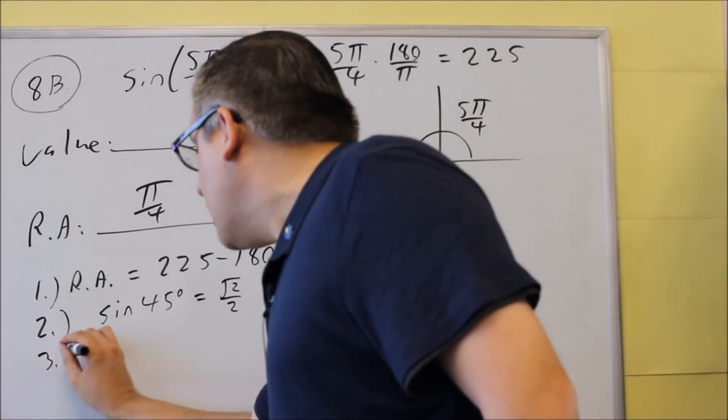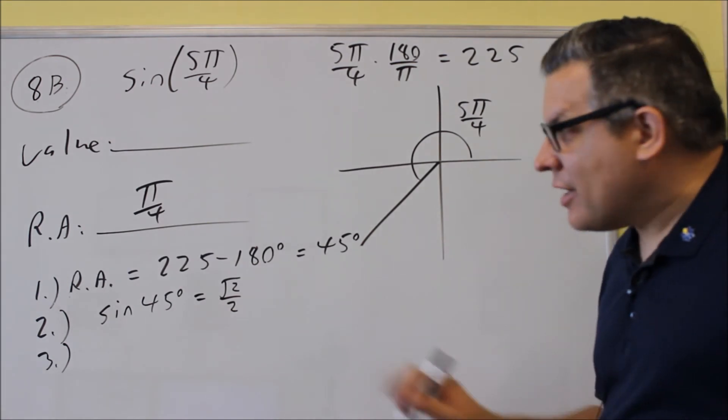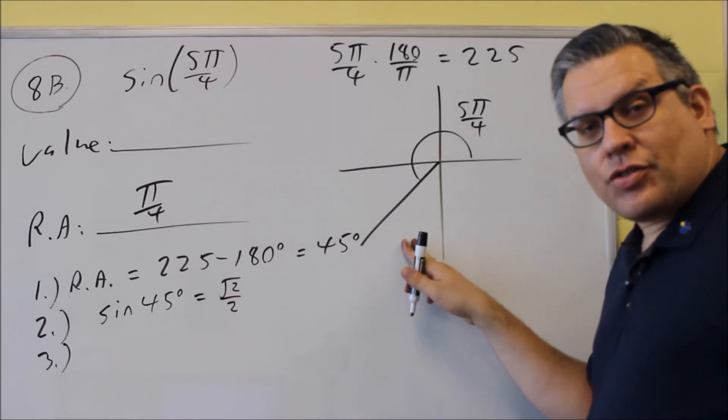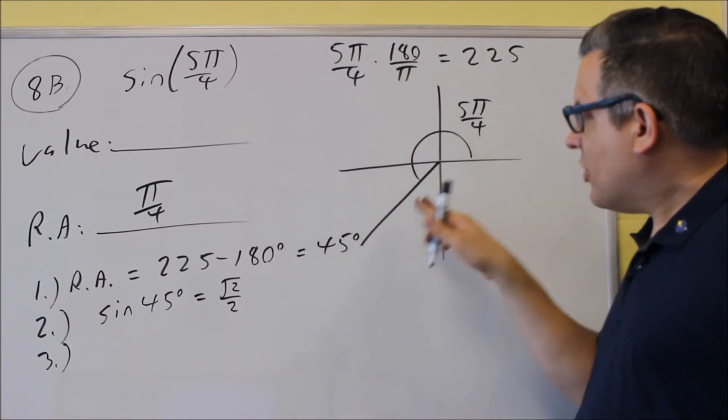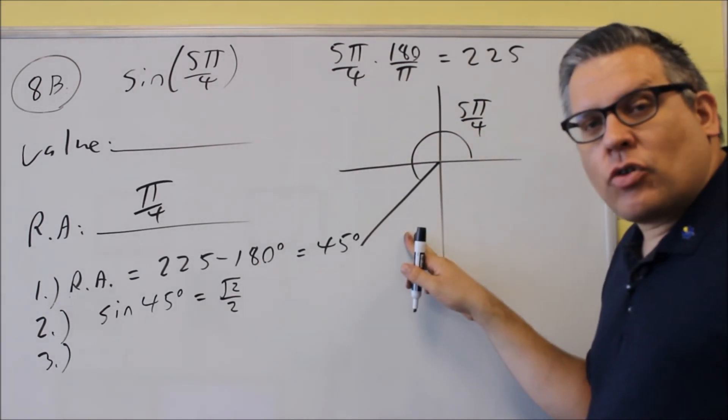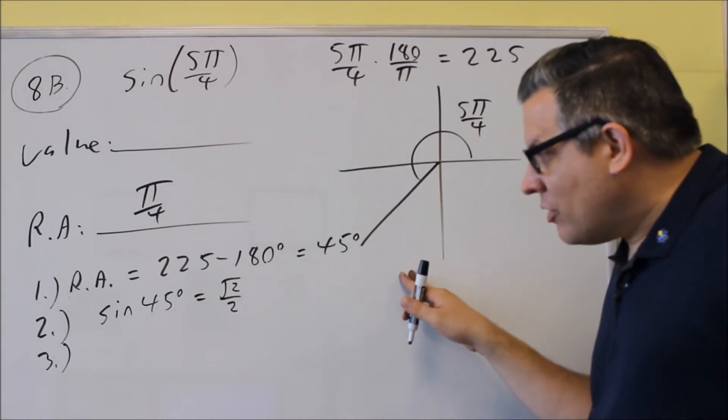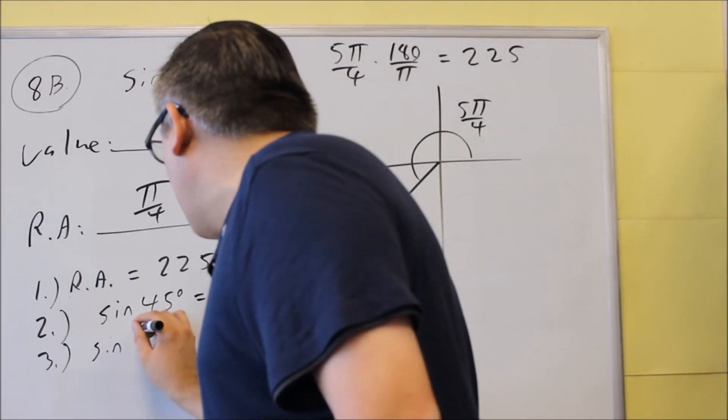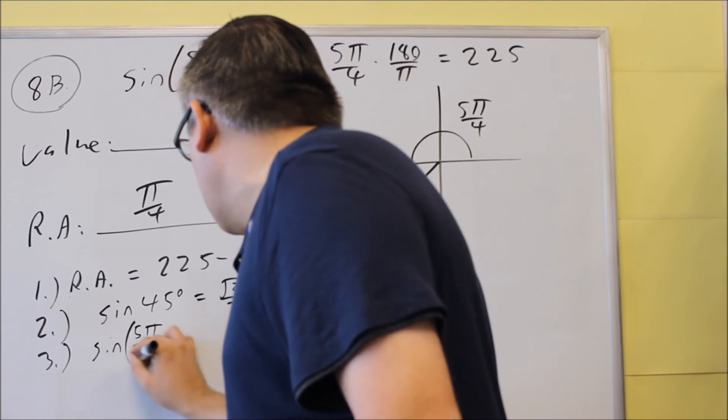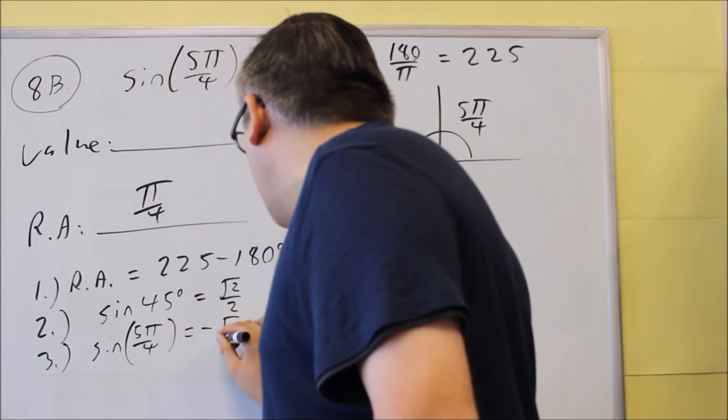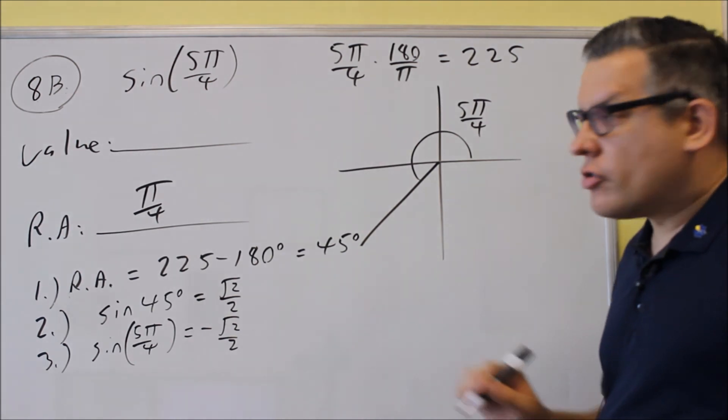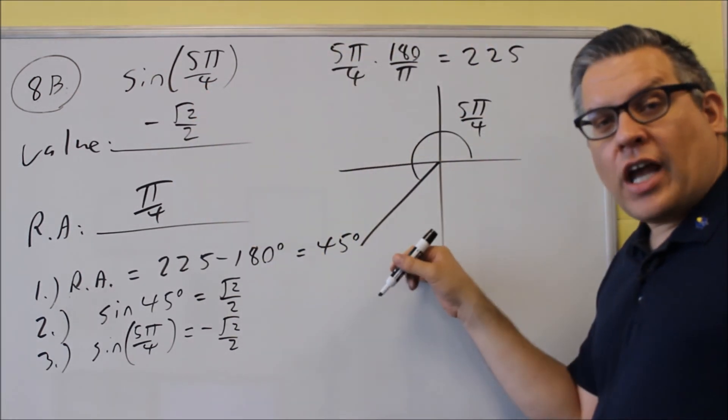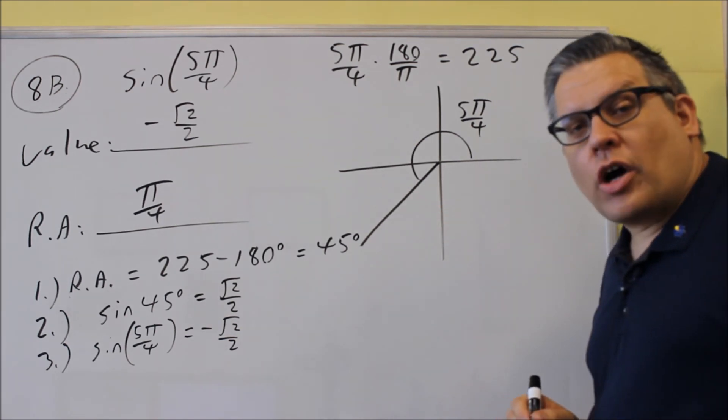For step 3, you're going to apply the appropriate sign depending on the quadrant it's in. We're in the third quadrant, so all students take calculus. T stands for tangent, everything else is negative. That means that this value needs to be negative when we write our value. So sine of 5π/4 is going to be equal to negative √2/2. We have to put that negative sign there because, again, your sine would have to be negative in the third quadrant.